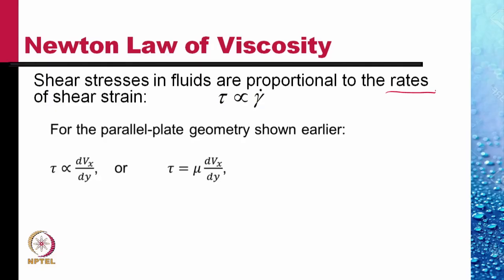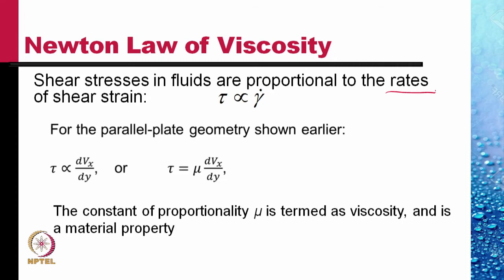So for the parallel plane geometry shown earlier, tau, the shear stress, is proportional to delta Vx by delta y. Or introducing the proportionality constant mu, tau is equal to mu delta Vx by delta y. The proportionality constant is termed as the viscosity and is a material property.